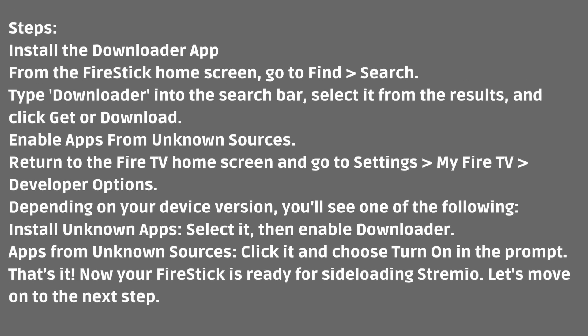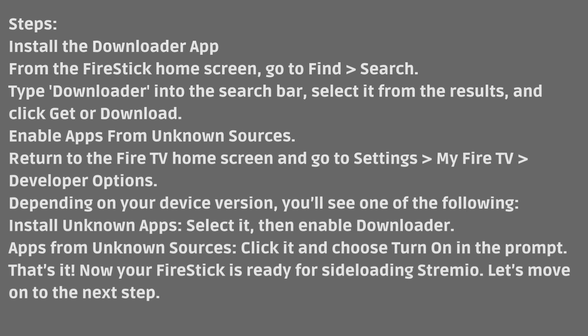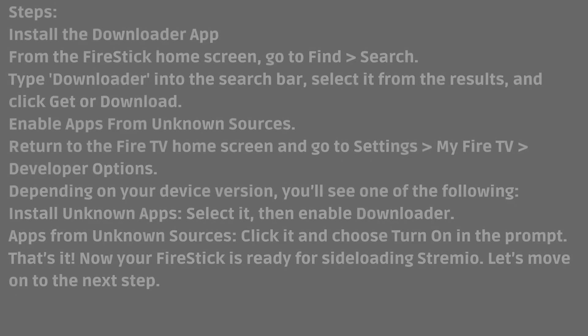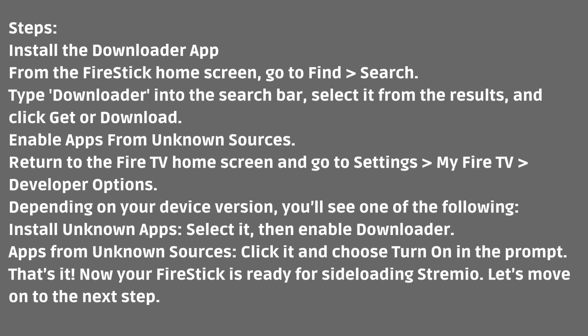Now enable apps from unknown sources. Return to the Fire TV home screen and go to Settings > My Fire TV > Developer Options. Depending on your device version, you'll see one of the following: Install unknown apps — select it, then enable Downloader. Or Apps from unknown sources — click it and choose Turn On in the prompt. That's it. Now your Fire Stick is ready for sideloading Stremio.